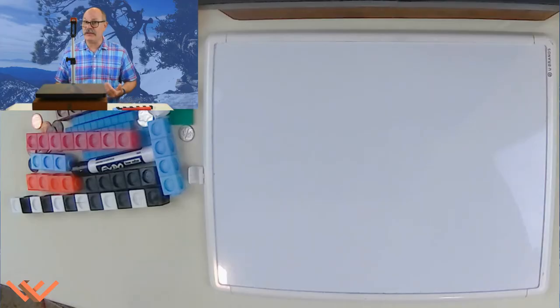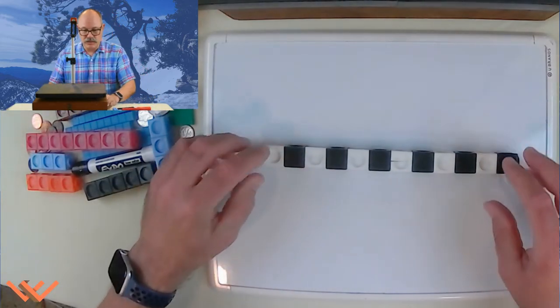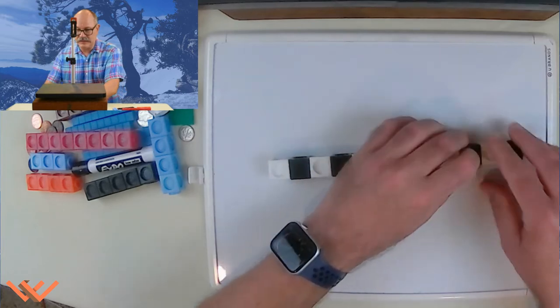So today we're going to be working with teen numbers minus 10, and then we're going to work with teen numbers minus large single digit numbers. Let's get started. Remember, this is subtraction. So we have, let's look at this, 1, 2, 3, 4, 5, 6, 7, 8, 9, 10.